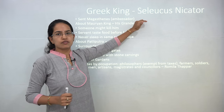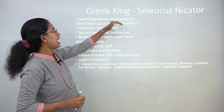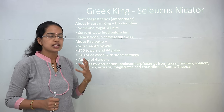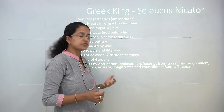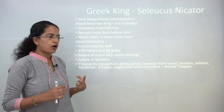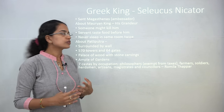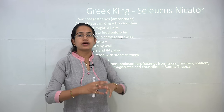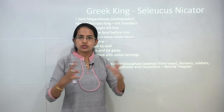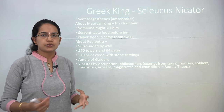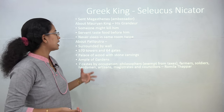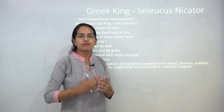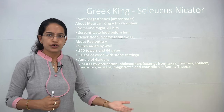Seleucus was one of the Greek kings who had an ambassador named Megasthenes. Megasthenes is important in Indian history because he wrote extensively about the Mauryan period. He wrote about the Mauryan king and the city of Patliputra — describing the grandeur of the Mauryan period, the palaces and forts built of wood with stone carvings. He noted there was a high risk of someone killing the king, so every food offered to the king was first tasted by servants.